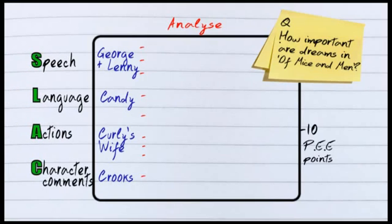When you're making these points, you look at what the characters actually say, the language used to describe them, the actions that they take, and also other character comments. A good example for character comments with Curley's wife is when she talks about Curley, saying Curley isn't very nice.